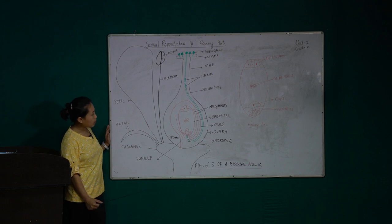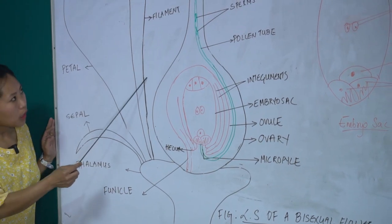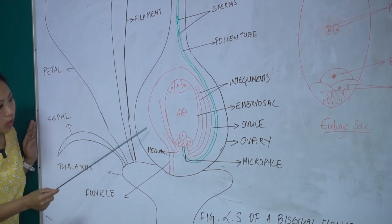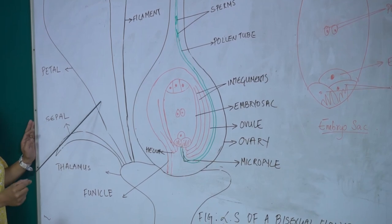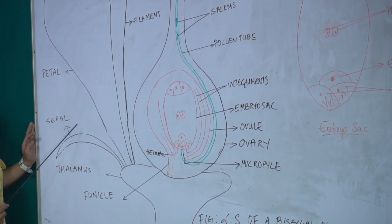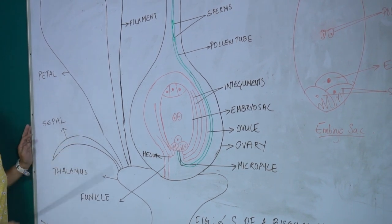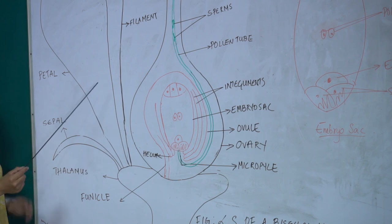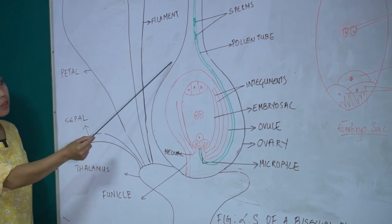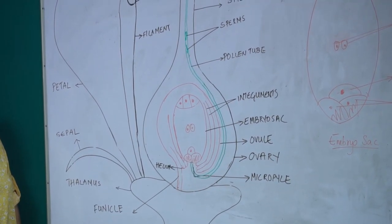A typical bisexual flower consists of the sepal, the petal, the stamen, and the pistil or carpel. The sepal and petal are called the non-essential or accessory whorls, while the stamen and pistil are called the reproductive whorls or essential whorls. In a flower, the stamen and the pistil are the two structures which take part in sexual reproduction.